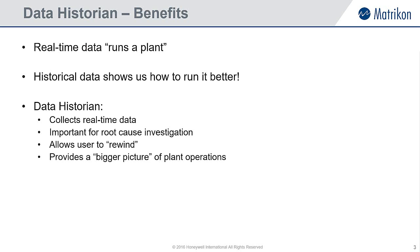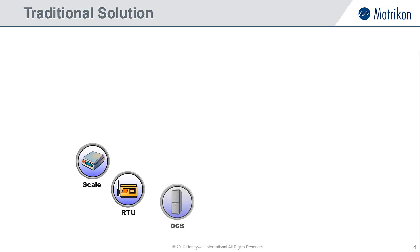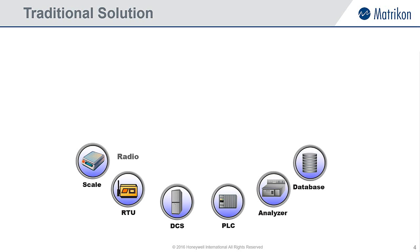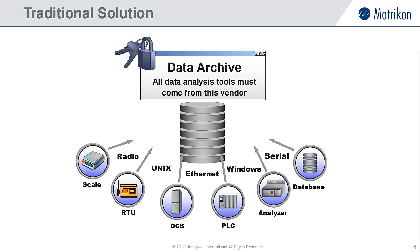Now that we've covered the importance of archiving our data, let's take a look at some of the available solutions. Here is an example of a traditional plant historian. Real-time data is collected from the various devices into the historian where that data is archived. Although this model works, one of the major downsides is that the data is locked up by the vendor of the historian, and in many cases can only be accessed by using the vendor-supplied tools. Customers got frustrated with this restriction — there had to be a better way. And this leads us on to the OPC-based solution.